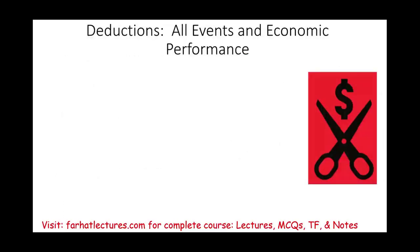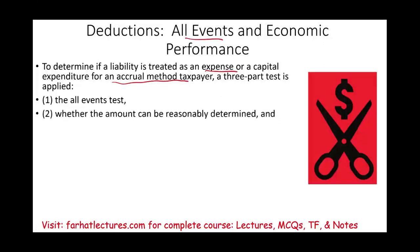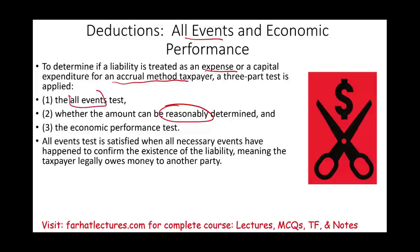Switching from income to deductions: for an accrual taxpayer, a three-part test is applied. First, the all events test — all necessary events have occurred to confirm the existence of the liability, meaning the taxpayer legally owes money to another party. Second, the amount must be reasonably estimatable. Third, there is an economic performance test. Economic performance for a liability depends on its nature — for services, economic performance is met when the services are actually provided.